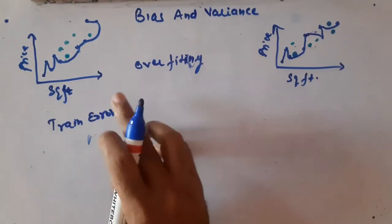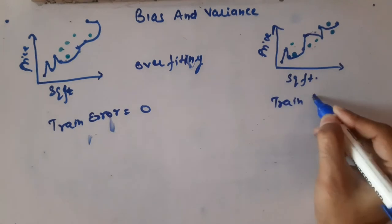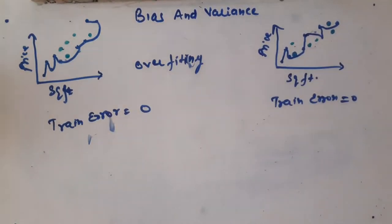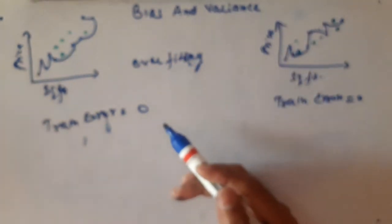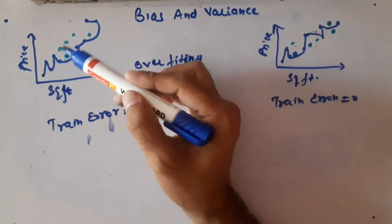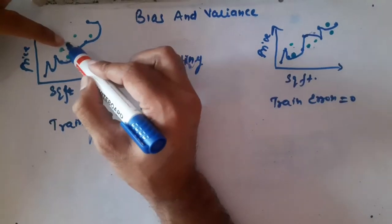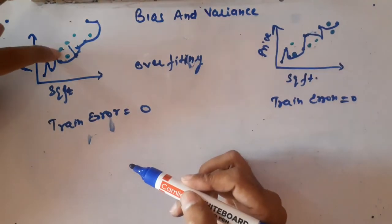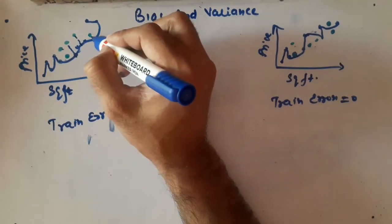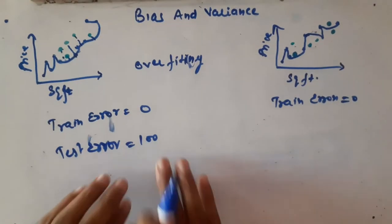Since each training data point is covered during training, our training error will be zero — we are not making any error on training data. But during testing, for each green test data point, the model predicts a value on the fitted line, but the actual point is somewhere else. The gap between the predicted and actual values contributes to the error, which sums up to a high number — let's say 100.